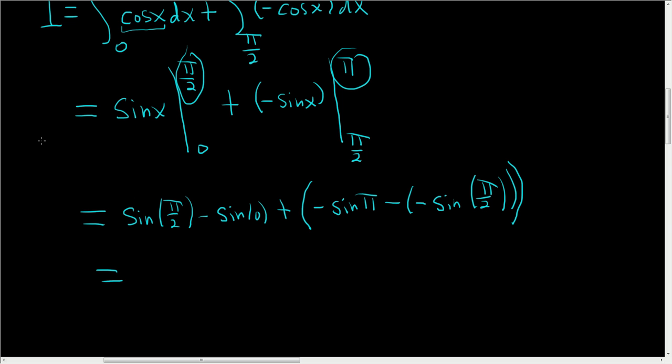All right. If you forget what the sine of pi over 2 is, just draw a little picture and think about the unit circle. Remember on the unit circle, the x-coordinate is cosine theta and the y-coordinate is sine theta. So here's pi over 2.